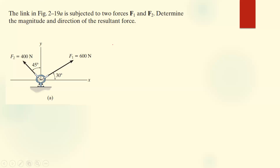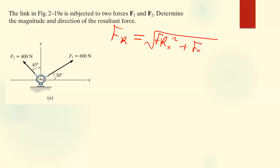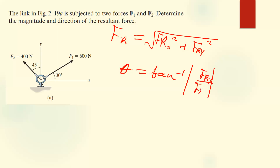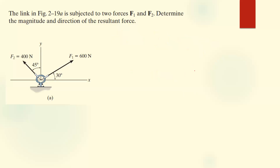We're going to use the formula: FR is equal to the square root of FR in the X squared plus FR in the Y squared. And then to find the direction, we're going to say theta is equal to tan inverse of the absolute value of FR in the Y over FR in the X. So let's begin to find the respective components.